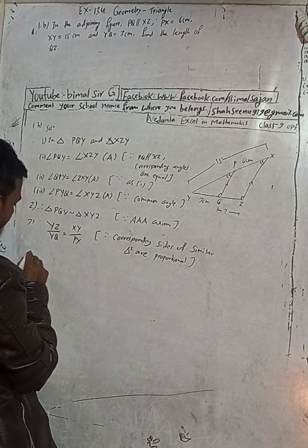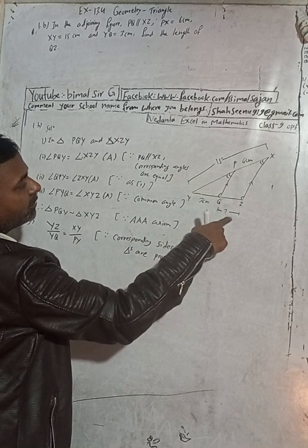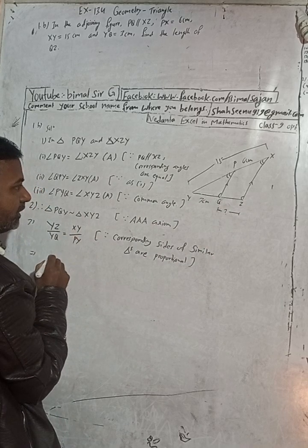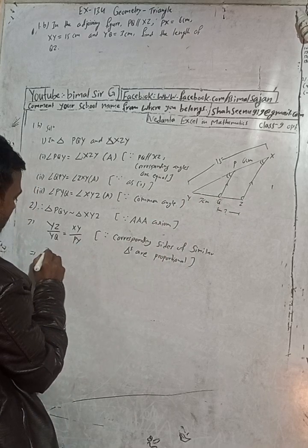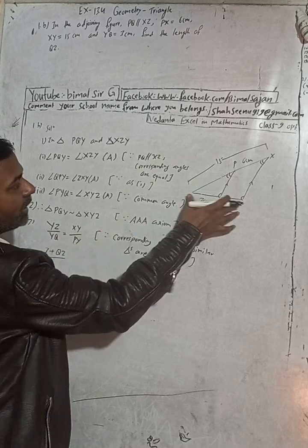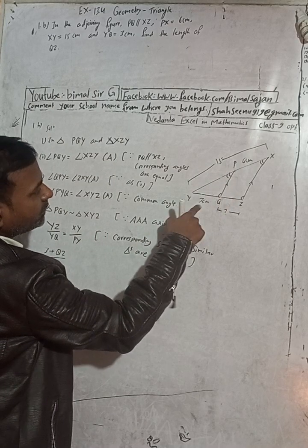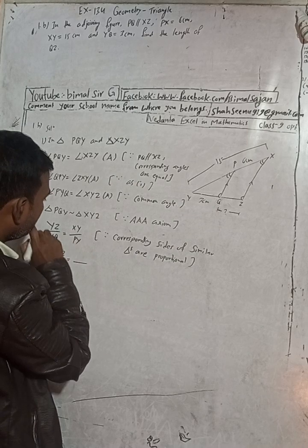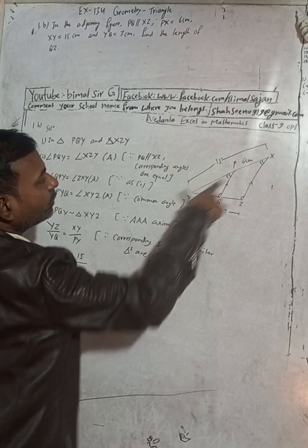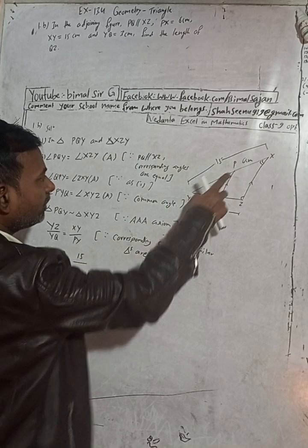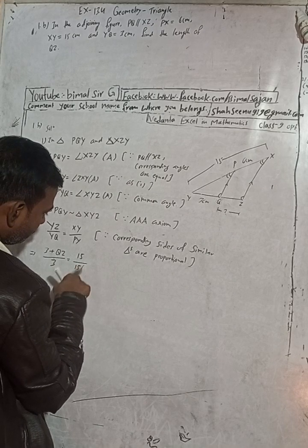Now substituting the values: YZ is 3 plus QZ, YQ is given as 3, XY is given as 15, and PY equals XY minus PX which is 15 minus 6 equals 9. So the equation becomes: (3 + QZ) / 3 = 15 / 9.